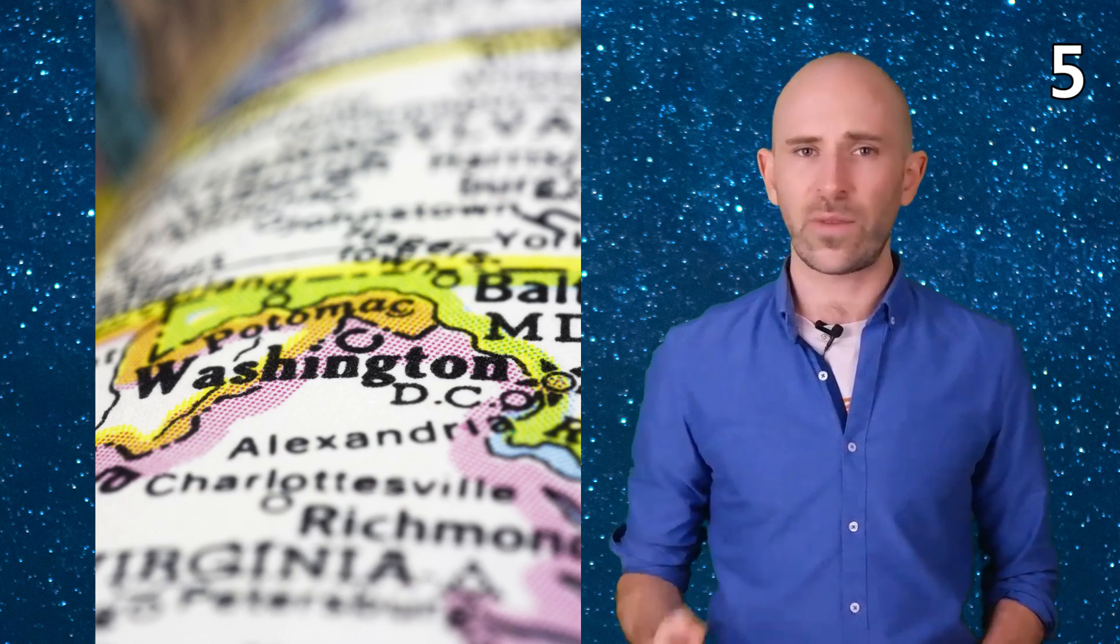5. Contrary to what is often said, Washington DC was not really built on a swamp. Only about 1% of the land city designer Pierre Charles L'Enfant used for the city was actually wetland.